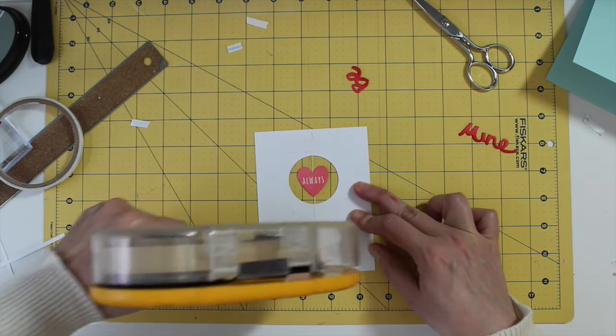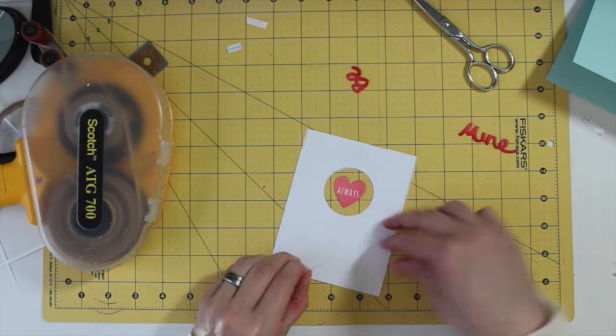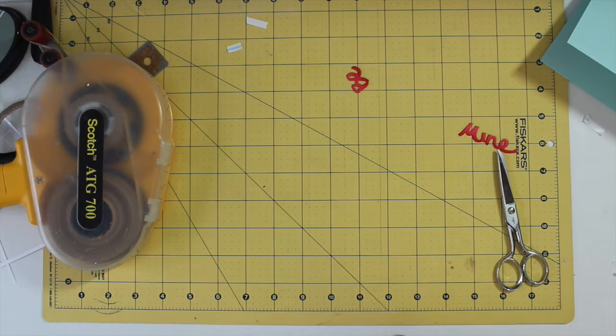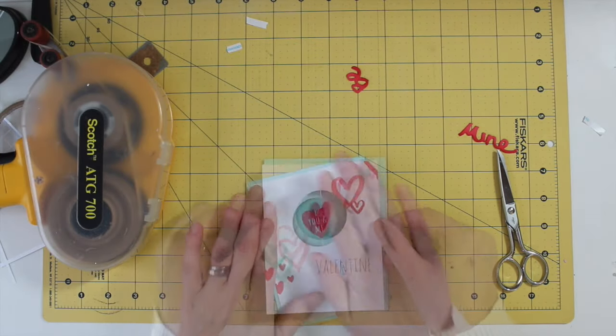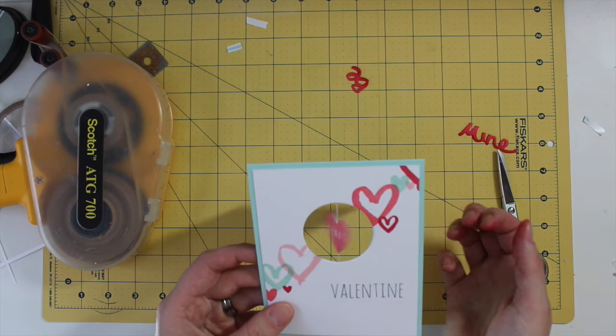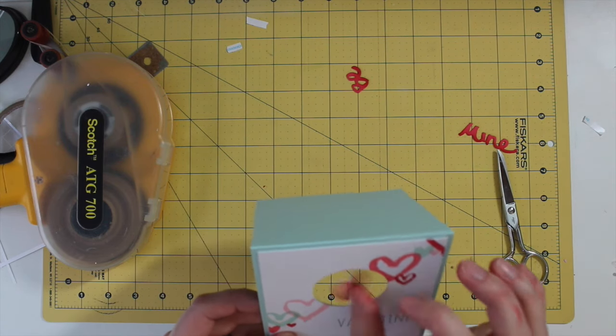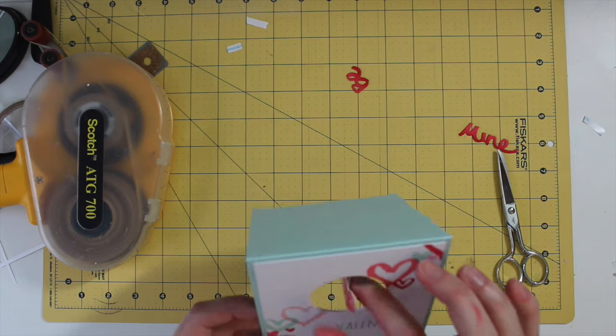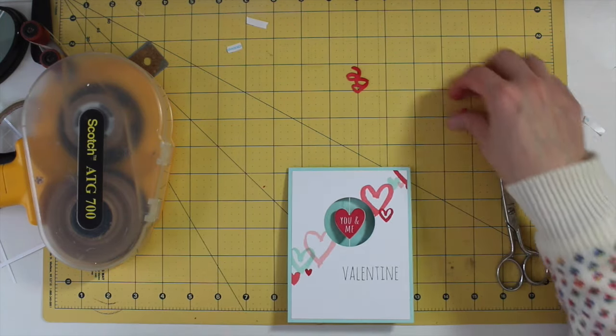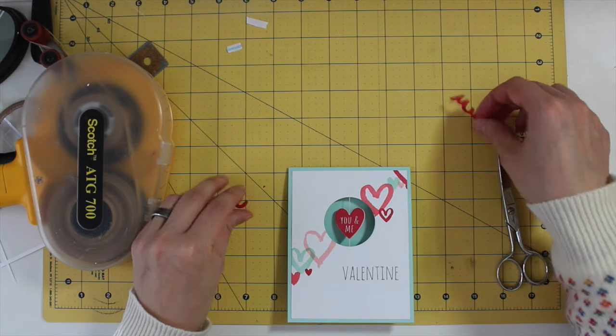So I'm just going to push it down nice and tight, and then add a little adhesive again just to make sure it doesn't slip. Cut off the extra little tail there, and then we can adhere this to the card front. So now it's all on there nice and tight, and you can see it's just a fun interactive element for a card.